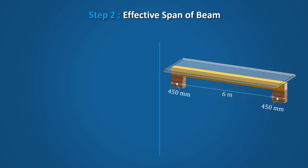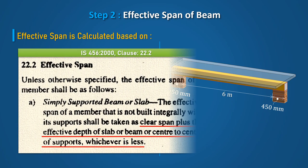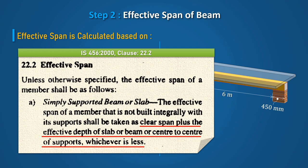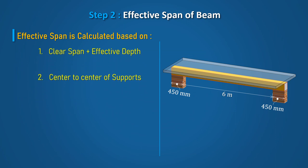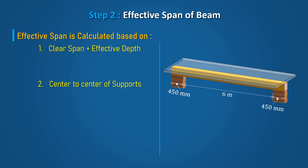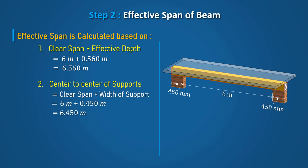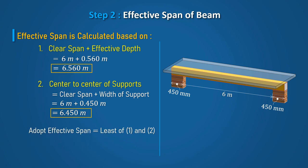In Step 2, calculate the effective span of the beam by referring to clause 22.2 of IS456 as clear span plus effective depth, or center-to-center of supports, whichever is less. Clear span plus effective depth equals 6.56m, and center-to-center of supports is 6.45m. Adopt effective span equal to the lesser value, which is 6.45m.